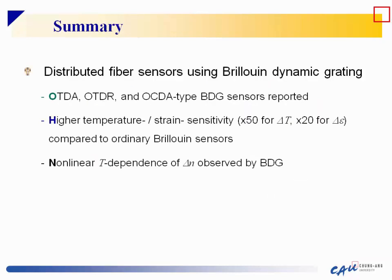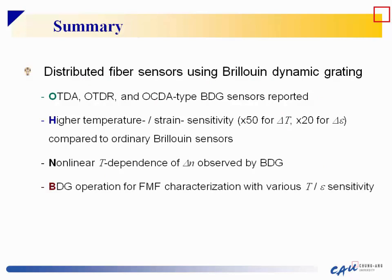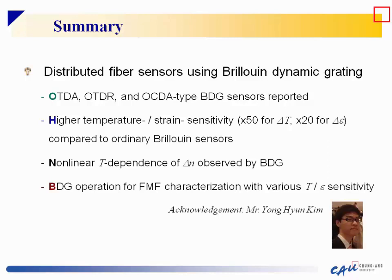In summary, distributed fiber sensors using Brillouin dynamic gratings were reported in OTDA, OTDR, and OCDA configurations, with higher temperature and strain sensitivity — about 50 times and 20 times respectively compared to ordinary Brillouin sensors. The non-linear temperature dependence of delta N was first observed via dynamic grating. BDG operation in few-mode fiber for characterization with various temperature and strain sensitivities was also reported. I acknowledge the contribution of Mr. Yonghyun Kim, master's student, who performed almost all the experiments. Thank you.